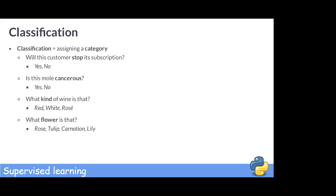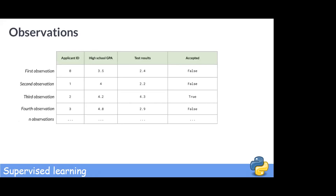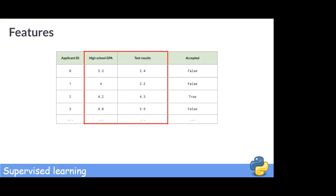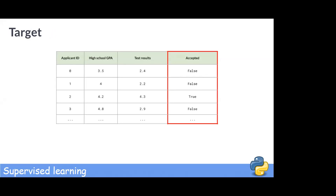Remember, we feed the model observations. Let's take college admissions, where we want to predict acceptance. For simplification, we show two features here: GPA and admission test results. We could have more features like involvement in student organizations and sports, or prizes applicants have won. The target is what we want to predict — there are two possible labels: those who are accepted and those who are not.